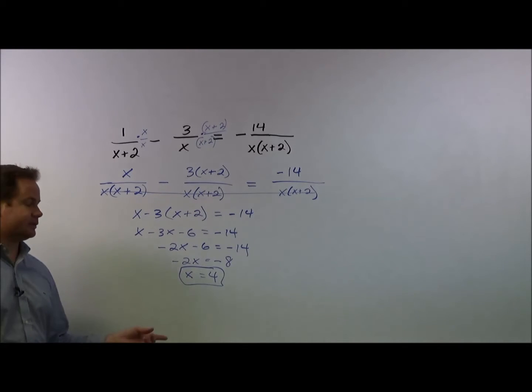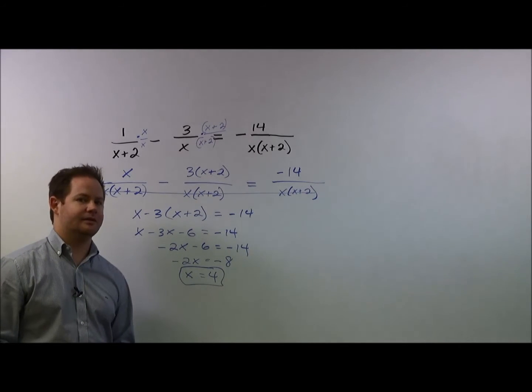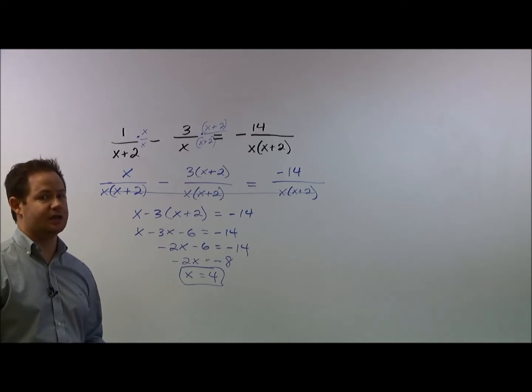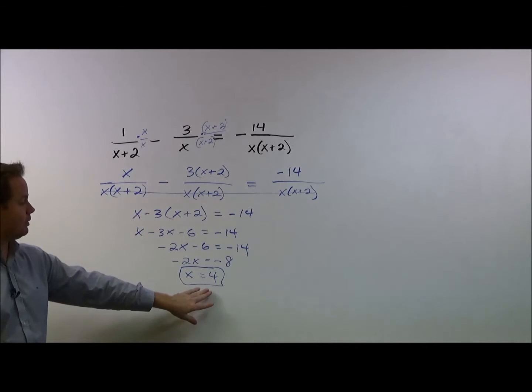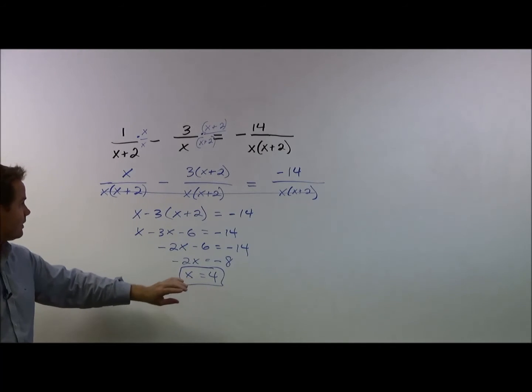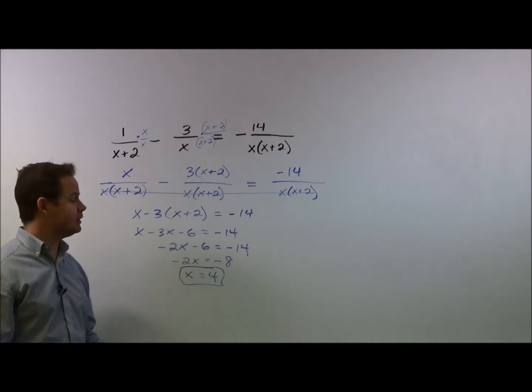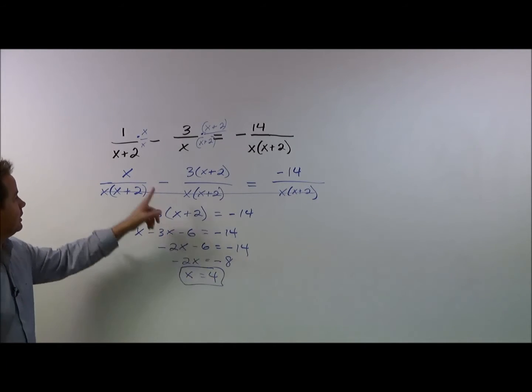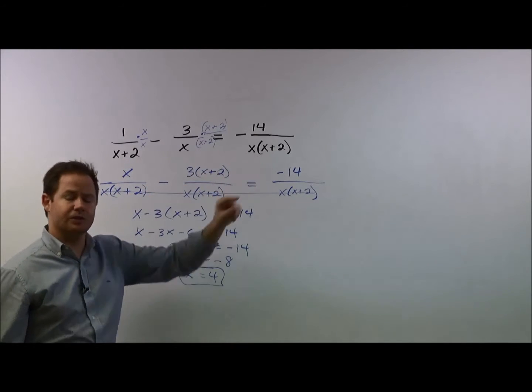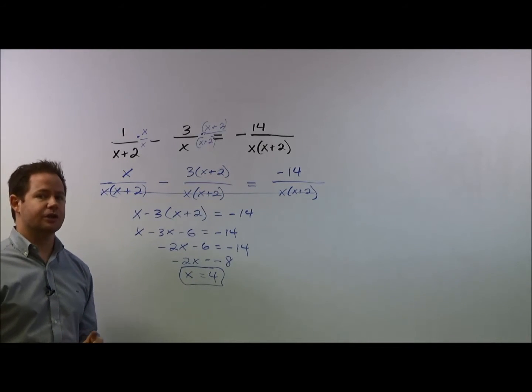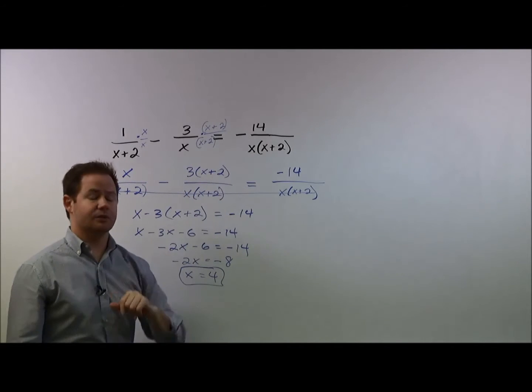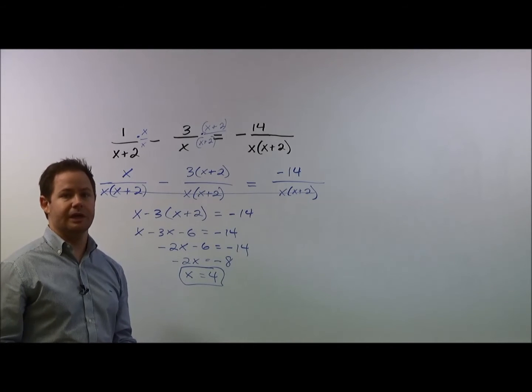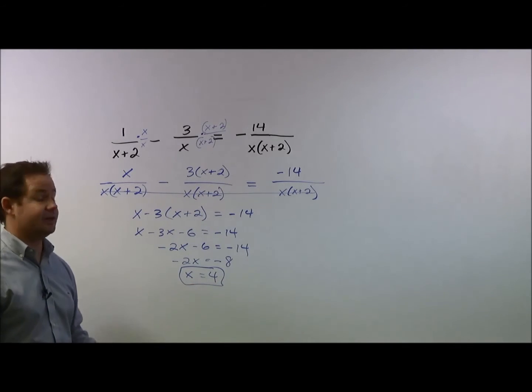Are we done? So hopefully you said no, we're not quite done, because there is one last thing that you have to check. And what you have to do is take whatever number you come up with for x, and if you came up with more than one answer, depending on the question, then you'd have to test each answer that you come up with. But you take the 4 in this case, and you're going to plug it back in for x into your original expression, and you're going to make sure that none of these denominators would be equal to 0. And that's because if a denominator equals 0, that means the fraction is undefined, and you would therefore not include that value in your solution.